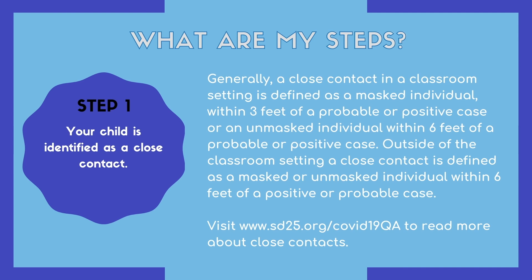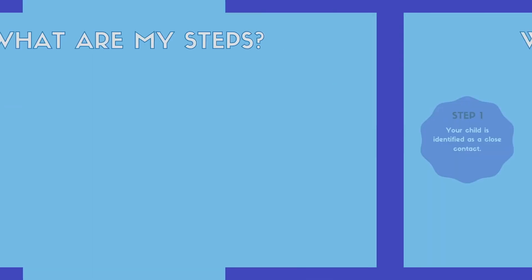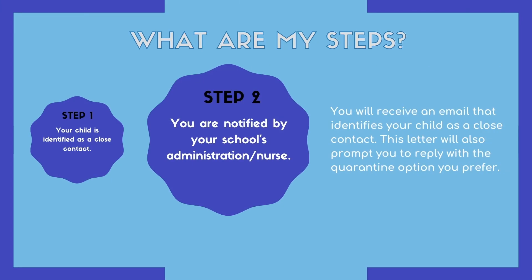Visit www.sd25.org/COVID-19QA to read more about close contacts. After your child is identified as a close contact, you will be notified by the school — either the nurse or the school administration — and this notification will come in the form of an email detailing the four different quarantine options and asking you to respond with which option you would prefer your child to participate in.